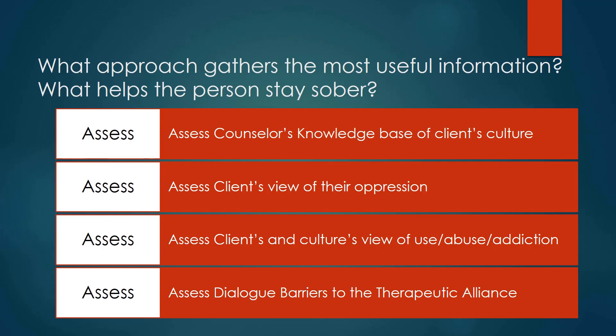We have to ask ourselves: what approach gathers the most useful information and what helps the person stay sober? Assessing your knowledge base of the client's culture — how do you assess in order to get the most useful information to help your client stay sober? Assessing the client's view of their oppression — how does that affect their understanding of why they use and what helps them stay sober within that context?